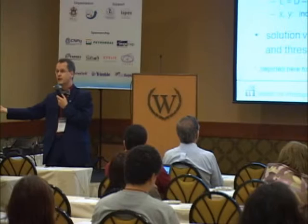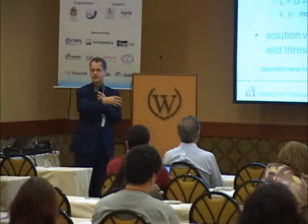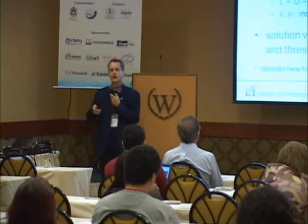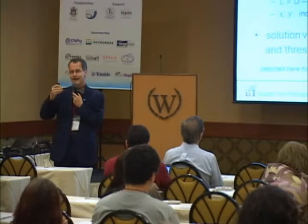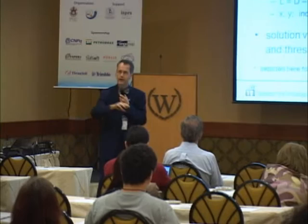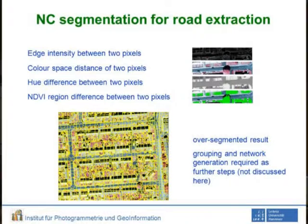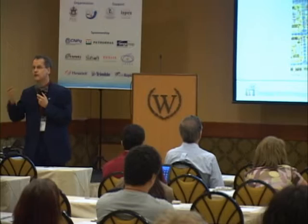The pixels either belong to one segment or another — there is nothing in between, no derivatives. You can only be pro or con. You have to relax some constraints and come up with approximate solutions. That's a good way of capturing local and global knowledge. Another beauty of Normalized Cuts is that it's a very elegant way to combine different criteria for segmentation. The ones we've used for road extraction are: edge intensity between pixels, color, hue difference, and NDVI. That's coding of what we know about the objects — maybe roads have a certain spectral signature.